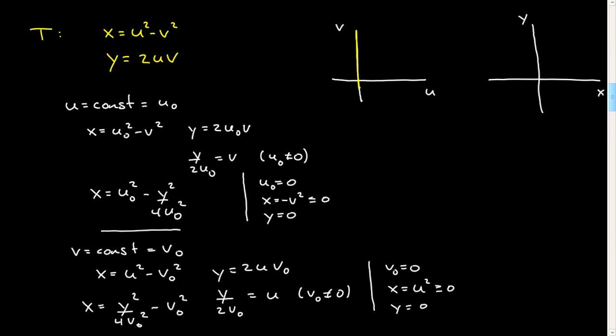So this is u equals a constant, namely u equals 0. So this is u naught equals 0, and that gets mapped to y equals 0 and x negative, and so that gets mapped over to here. And you'll notice that as v goes from minus infinity to plus infinity, what happens is this curve is traced twice.